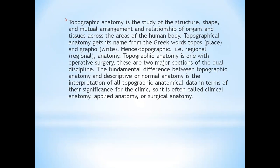Topographic anatomy is the study of structure, shape, and mutual arrangement and relationship of organs and tissues across the areas of the human body. Topographical anatomy gets its name from the Greek words 'topos' meaning place and 'grapha' meaning written. Hence, topographic — regional anatomy. Topographic anatomy is one with operative surgery; these are two major sections of the dual discipline. The fundamental difference between topographic anatomy and descriptive or normal anatomy is the interpretation of all topographic anatomical data in terms of their significance for the clinics, so it is often called clinical anatomy, applied anatomy, or surgical anatomy.